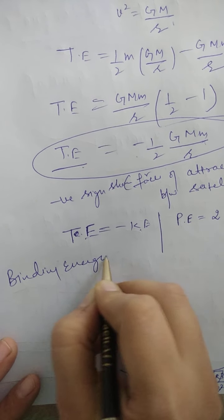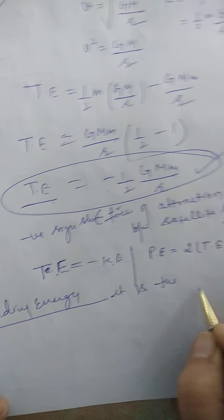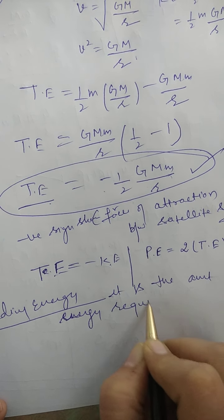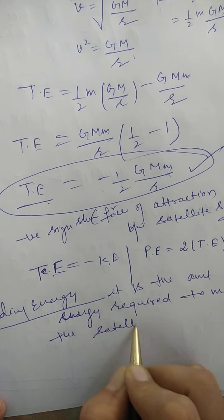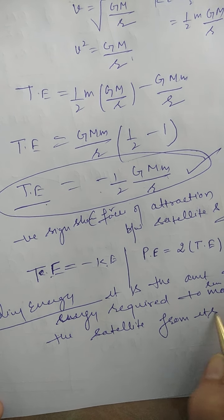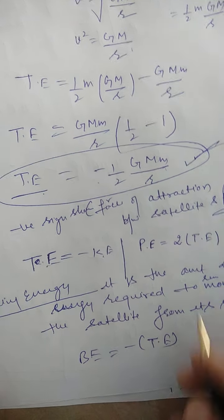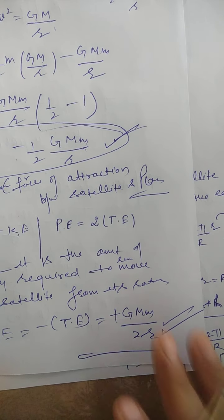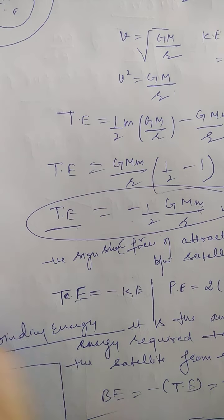Binding energy is the energy with which the satellite is bound to the planet, or the amount of energy required to remove the satellite from its orbit. Binding energy is equal and opposite to total energy. Since total energy is −GMm/2r, the binding energy is +GMm/2r. In the next video I will tell you about the angular momentum. Thank you.